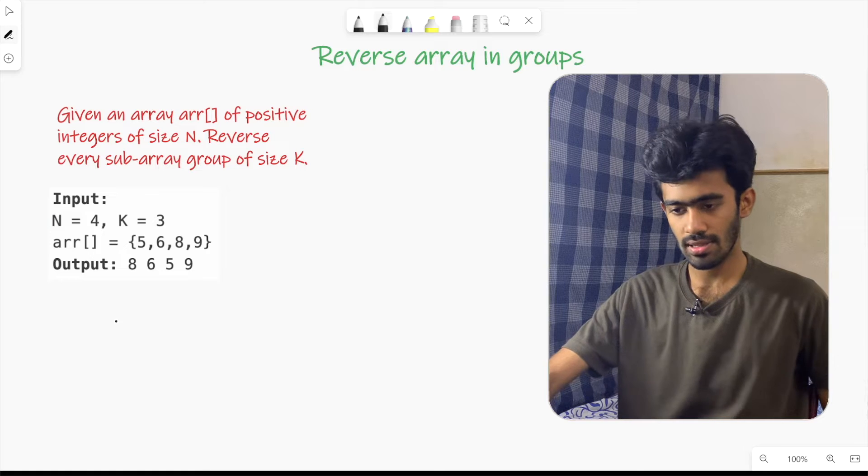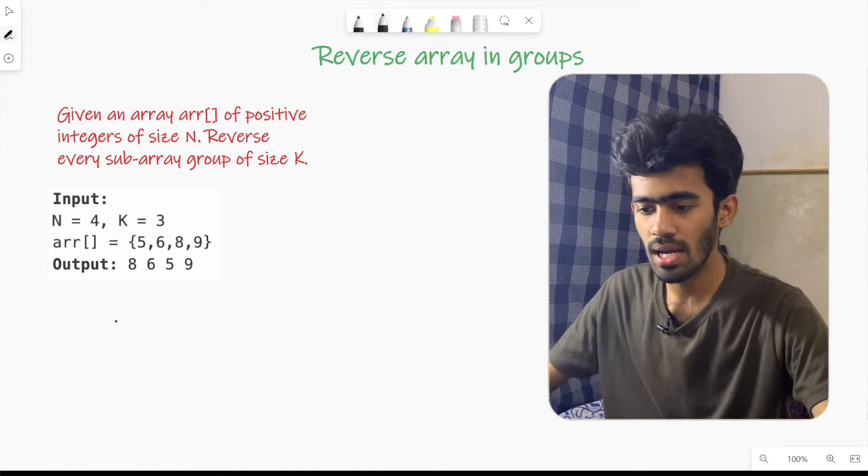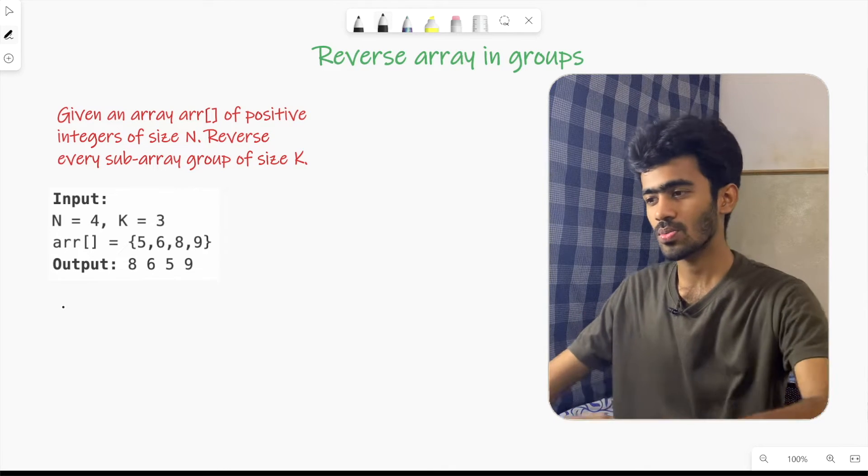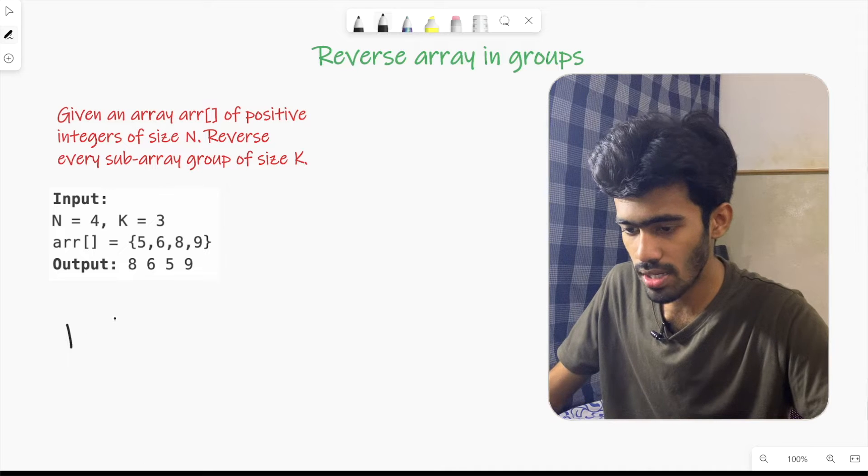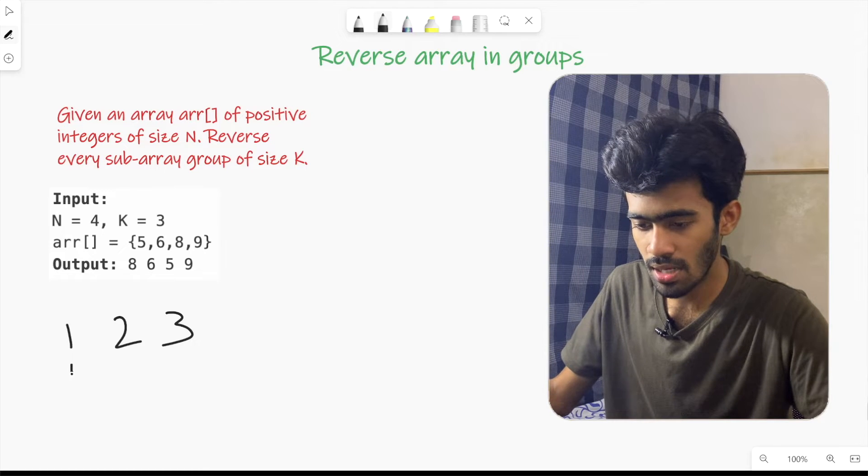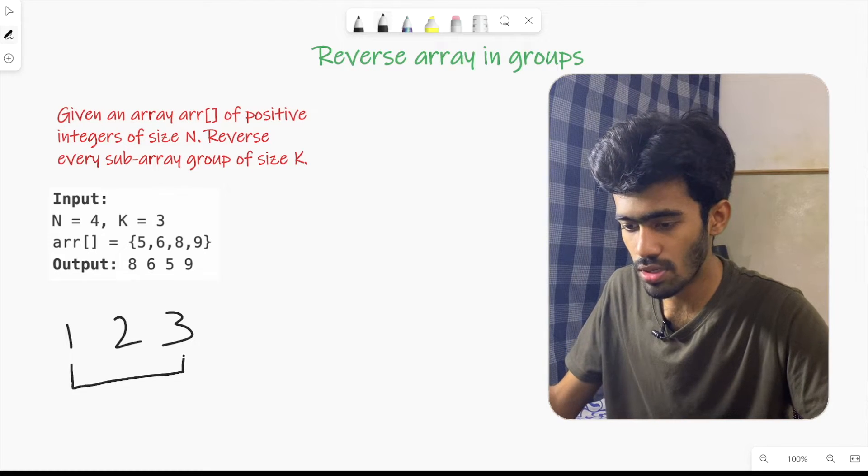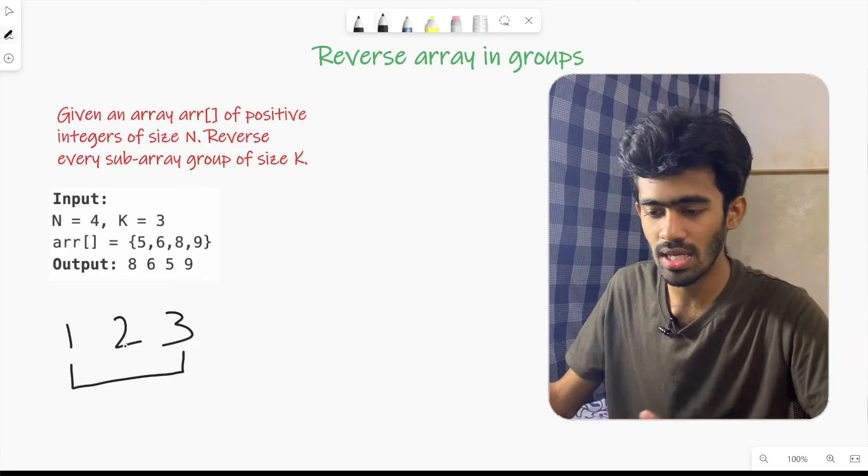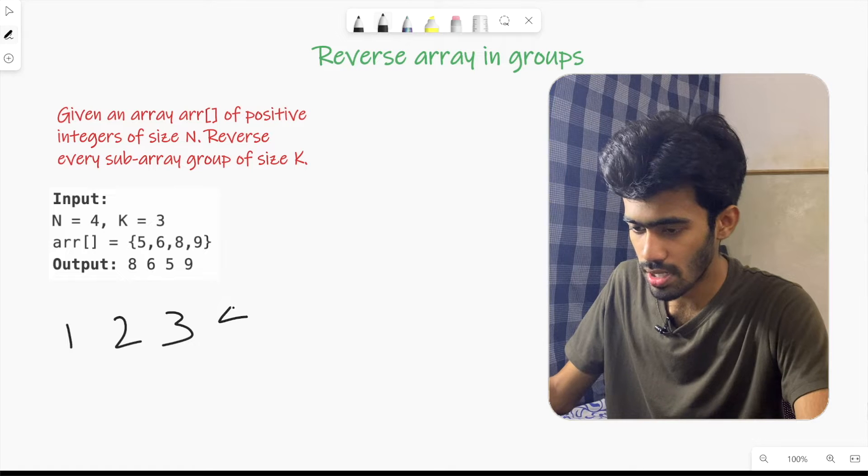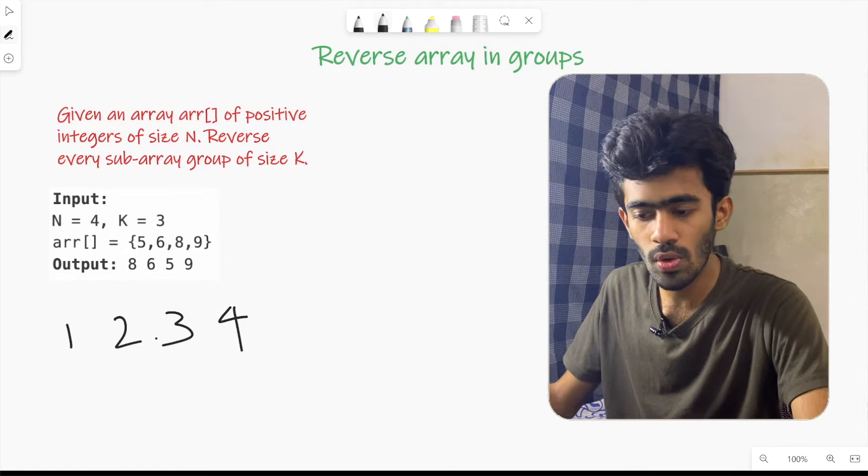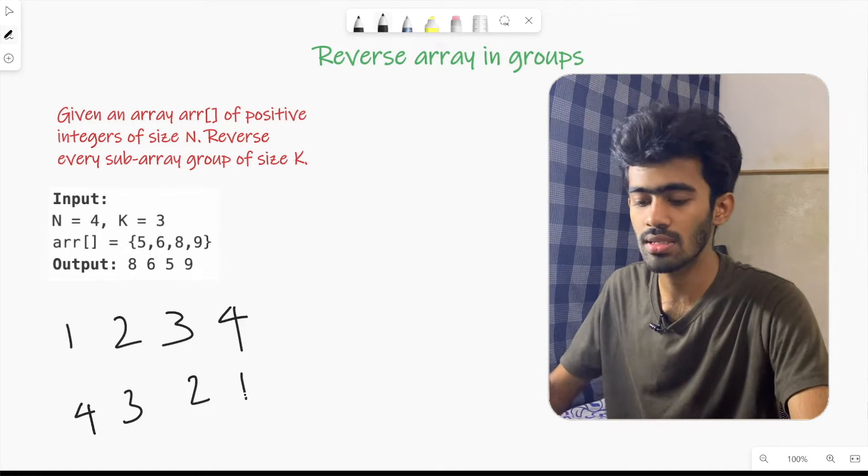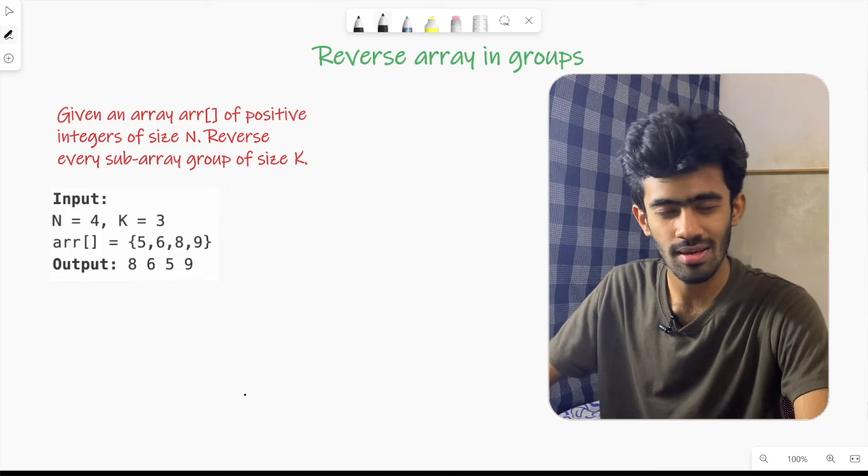Now, we have a logic here. What do we need to do? First of all, we need to use the swap technique. Let's say 1, 2, 3, 4. To reverse this array, we need to swap these numbers. This is the swapping technique. 1 and 4 swap, 2 and 3 swap. So we get 4, 3, 2, 1. This is the logic.